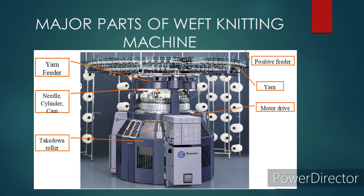Major parts of a weft knitting machine: Number one, creel — the creel is called the holder of the cone; the cone is placed in a creel for feeding yarn to the feeder. Number two, yarn feeder — since the yarn is fed through this, we call it the yarn feeder. The number of feeders in a weft knitting machine depends on the manufacturer. Number three, positive feeder — the positive feed system controls the tension of the yarn fed by means of a drive wheel or drive belt system. The yarn passes between two wheels and the quantity of yarn can be adjusted by approaching or withdrawing the wheels.